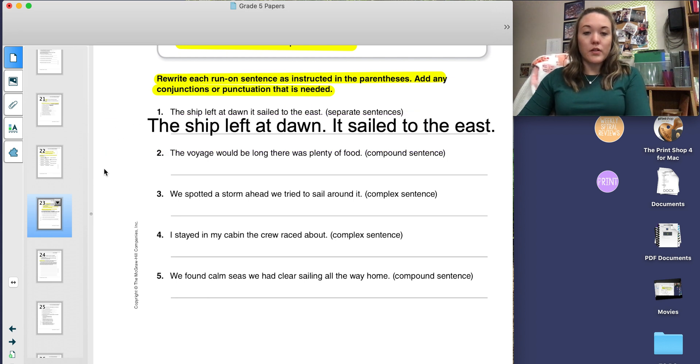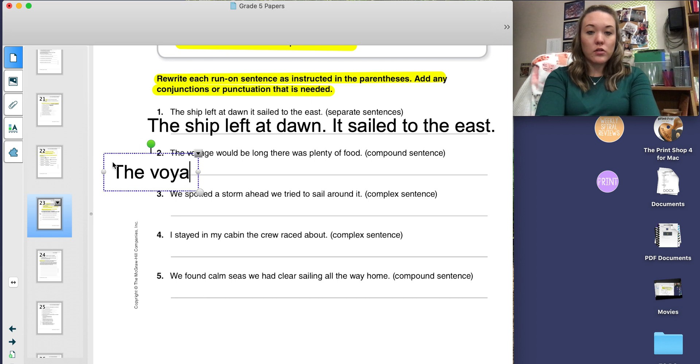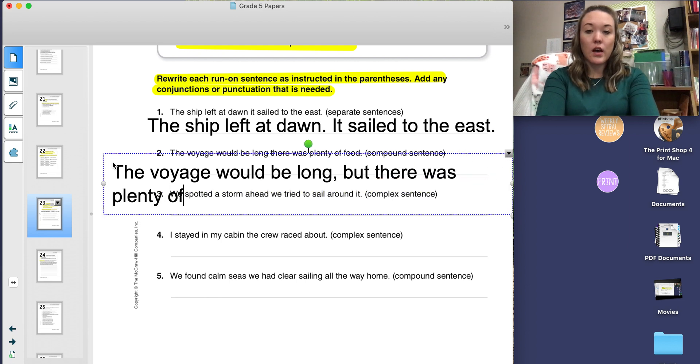Number two says, the voyage would be long, there was plenty of food. This says to make a compound sentence. Remember a compound sentence is two simple sentences or independent clauses put together and we separate it with a comma and a conjunction. So for this one, I'm going to write the voyage would be long, comma, but there was plenty of food.